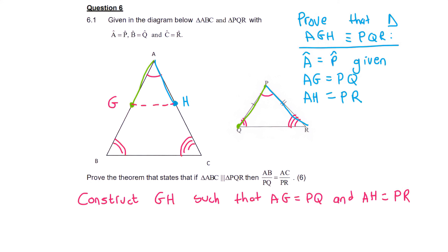And so these two triangles are congruent. Therefore triangle AGH is congruent to triangle PQR. And that's because of the side angle side theorem, because we have a side angle side.